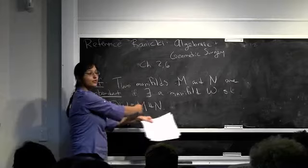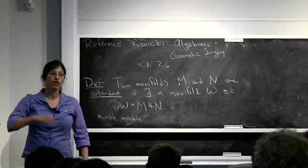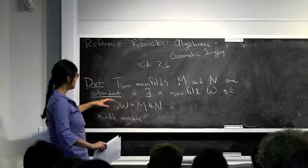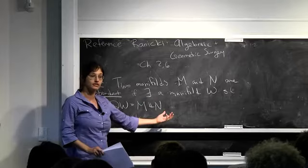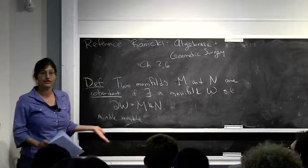You can say two 'stuffy' manifolds are cobordant if there exists a stuffy manifold W such that the boundary preserves whatever structure you care about. For example, if you wanted orientation, then you need the boundary to be M disjoint union negative M. And for something like framing, you want W to have the same kind of structure that restricts correctly to the structures on M and N. The basic outline of the definition is the same no matter what kind of cobordism you're doing.